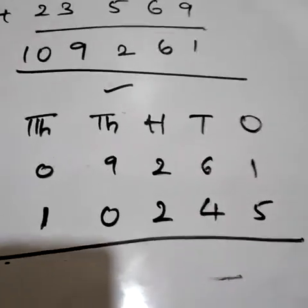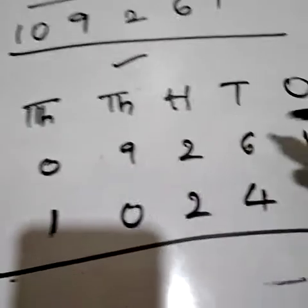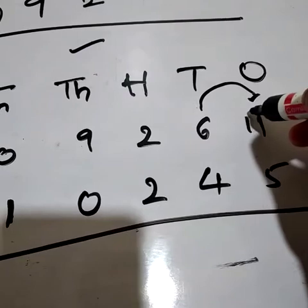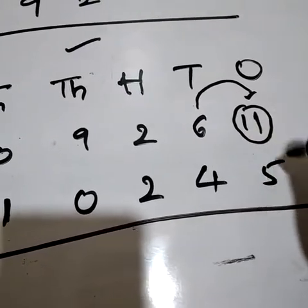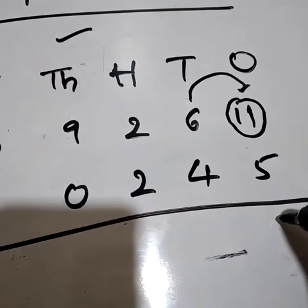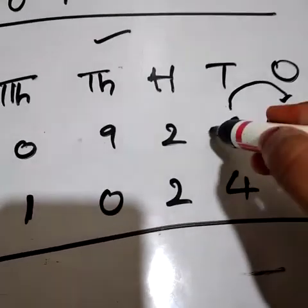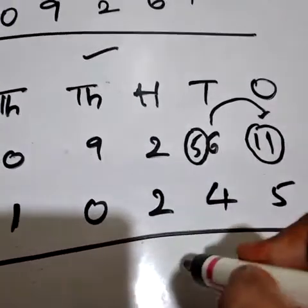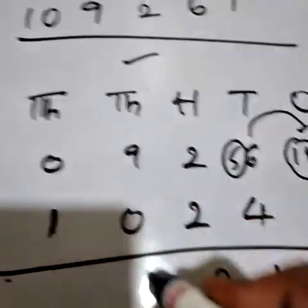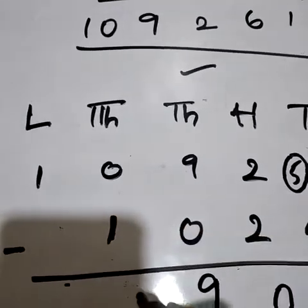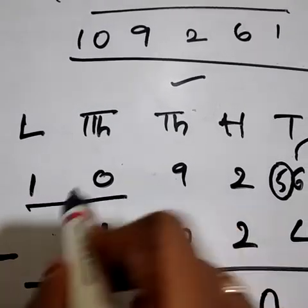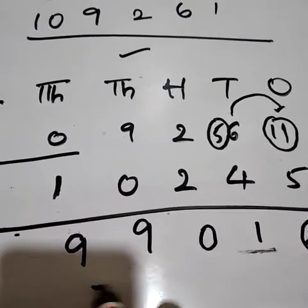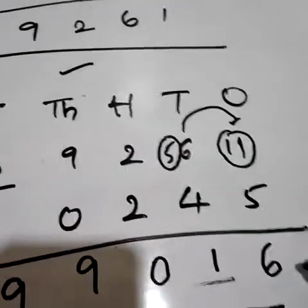Let us do the subtraction. 1 minus 5 we cannot do. So we have to take borrow from 6. This will become 11. 11 minus 5 is 6. This will become 5 because I have already given. 5 minus 4 is 1. 2 minus 2 is 0. 9 minus 0 is 9. 10 minus 1. Now we will calculate these two numbers. So 10 minus 1 is 9. This is our required result.